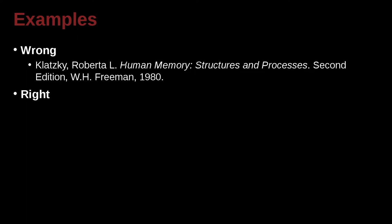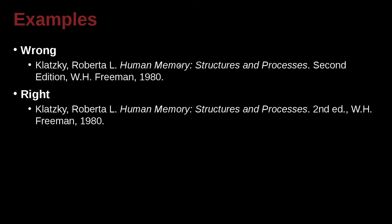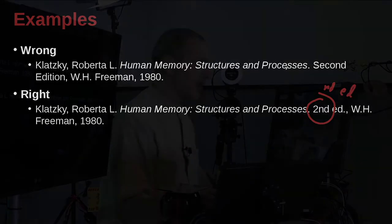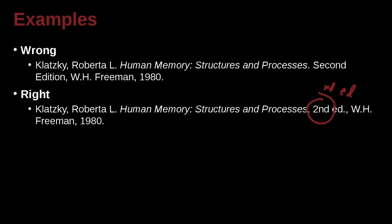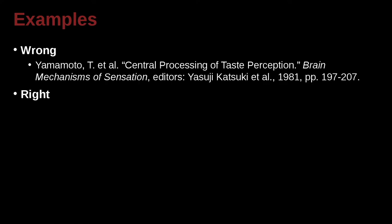Klatsky, Roberta L., Human Memory: Structures and Processes, 2nd Edition, W.H. Freeman, 1980. Here we have the author, the name of a book, and the edition specified. However, inside MLA we do need to be careful — you're allowed to write '2nd' and 'ed' as abbreviations. There are a few of these abbreviations in MLA where you shorten the word, and there's really no way to know unless you have the MLA guidelines right next to you.